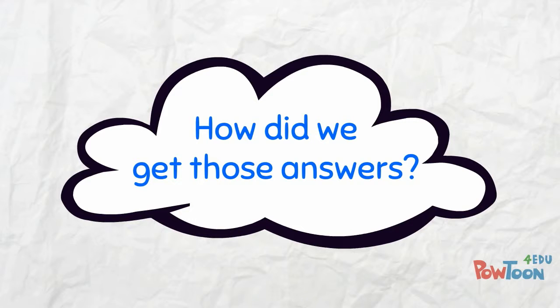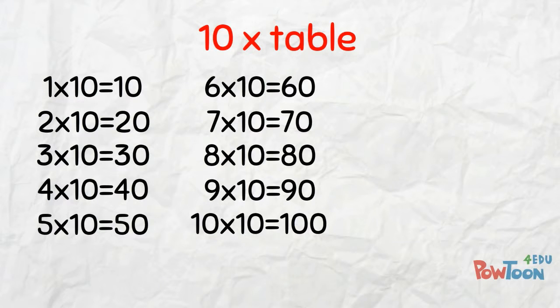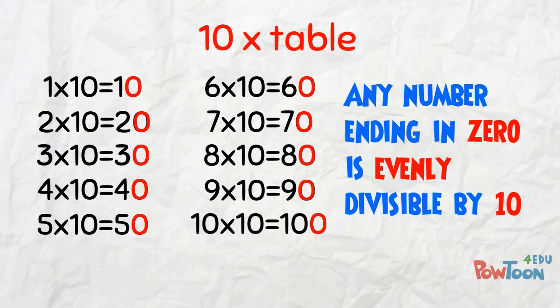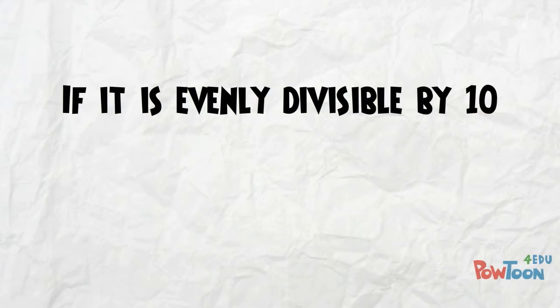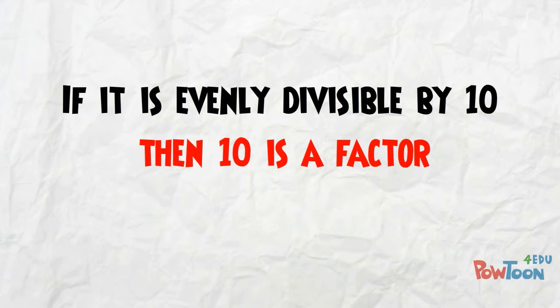How did we get to those answers? Think about the 10x table for a moment. Every product here ends in a 0, and any number, no matter how large, if it ends in a 0 then it is evenly divisible by 10. And if a number is evenly divisible by 10, then that means 10 is a factor!